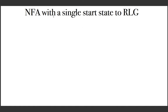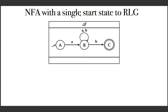We know that any NFA can be transformed into an NFA with a single start state. Hence, without loss of generality, we can assume that the given NFA has a unique start state. Here is an NFA with a single start state. Consider an accepting path: A, B going to a final state means the string 'ab' is in the language of the NFA. Our aim is to generate a right linear grammar such that the language represented by the grammar is exactly the language of this NFA.